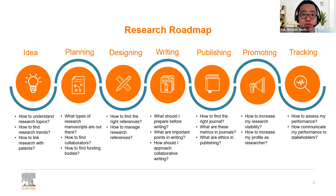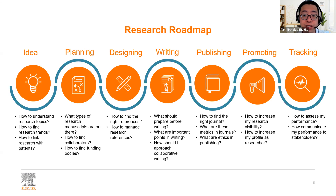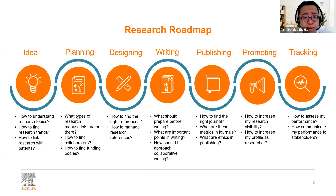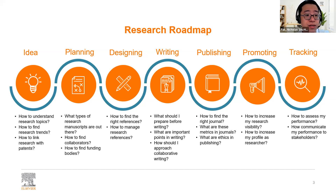The research roadmap comes in seven different stages: ideation, planning, how you can design your research theses and question, how you can write it, how you can promote it, how you can publish it, and how you can track it. Under ideation, you want to ask yourself how it is possible to understand research topics, how you can identify trends, and how you can link research with patterns.